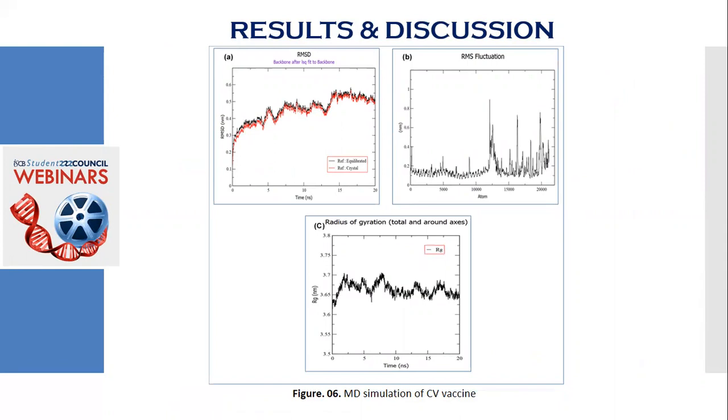Here, the graph shows the result of the MD simulation of the CV vaccine TLR8 complex. Here, in the graph A, I mean the RMSD graph, it shows that the structure had maintained a stable 0.5 nanometer deviation with minimum fluctuation.